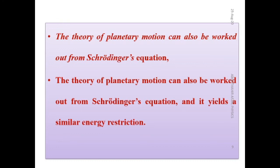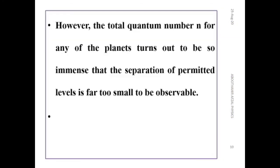For a planet, the energy difference between discrete levels is extremely small — far too small to detect. We said that for the hydrogen atom the quantum number characterizing discrete energy values is the principal quantum number. Similarly, we can imagine a principal quantum number n for planetary energy, but it turns out to be so immense that the separation of permitted levels is far too small to be observed or resolved.